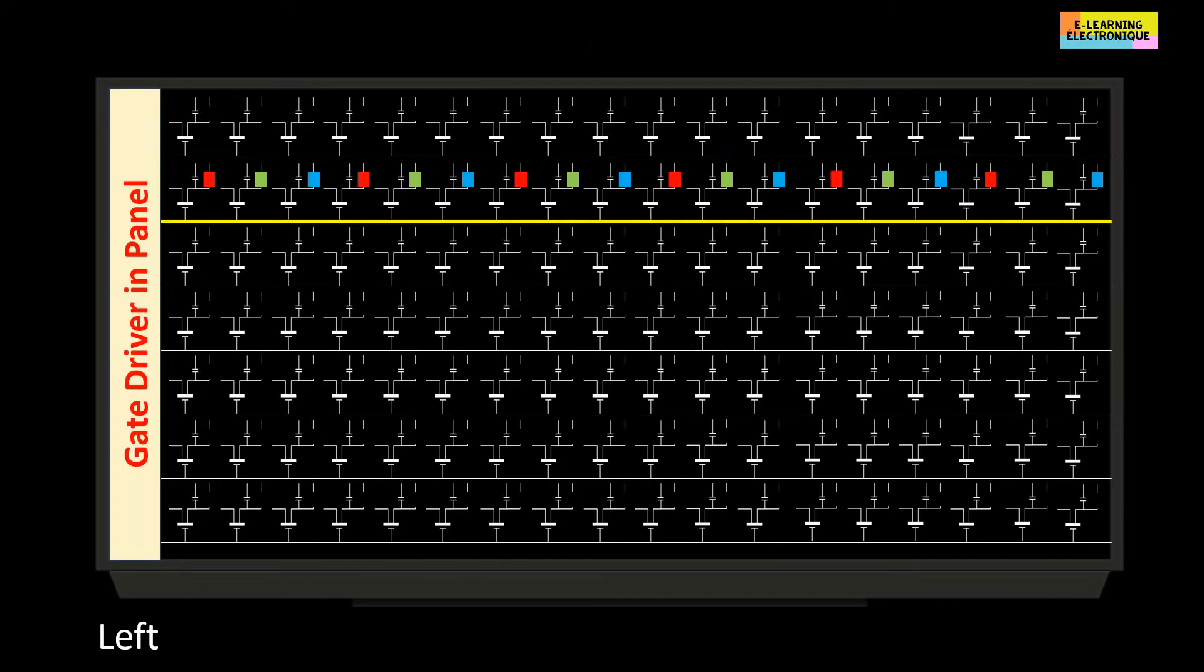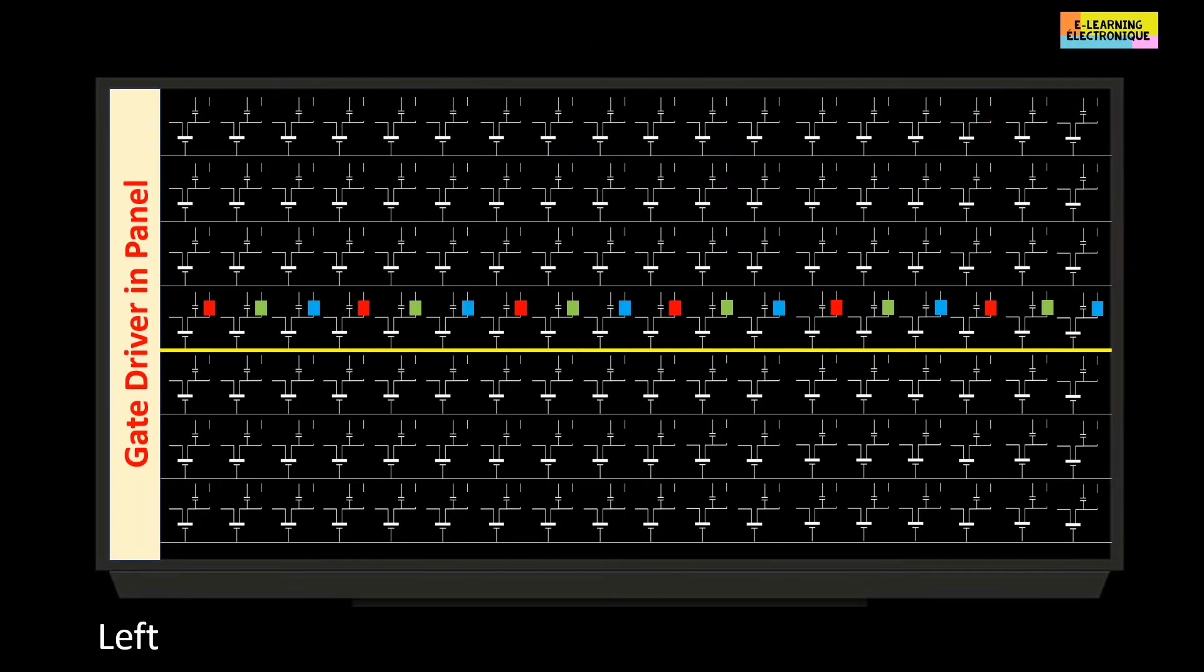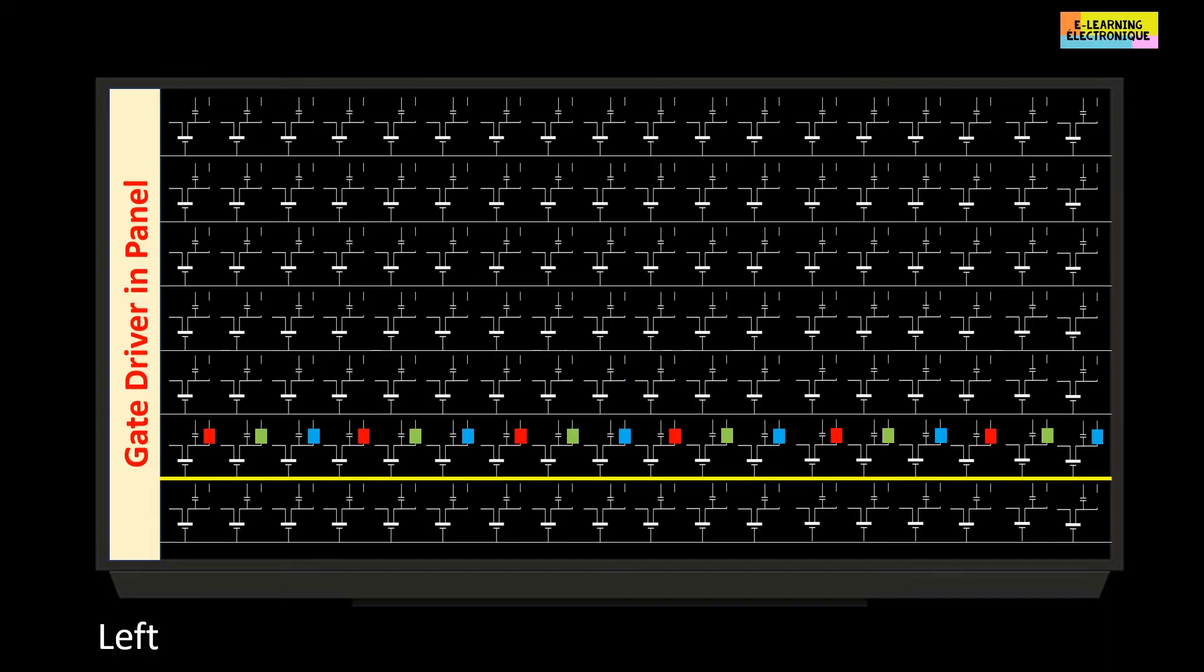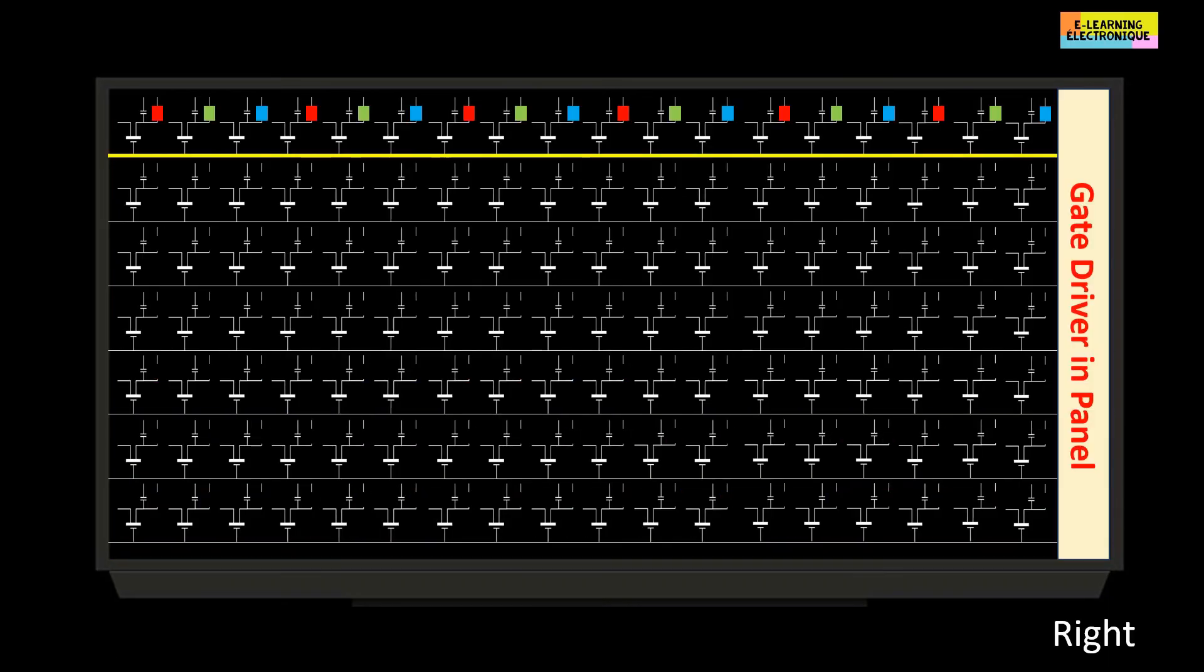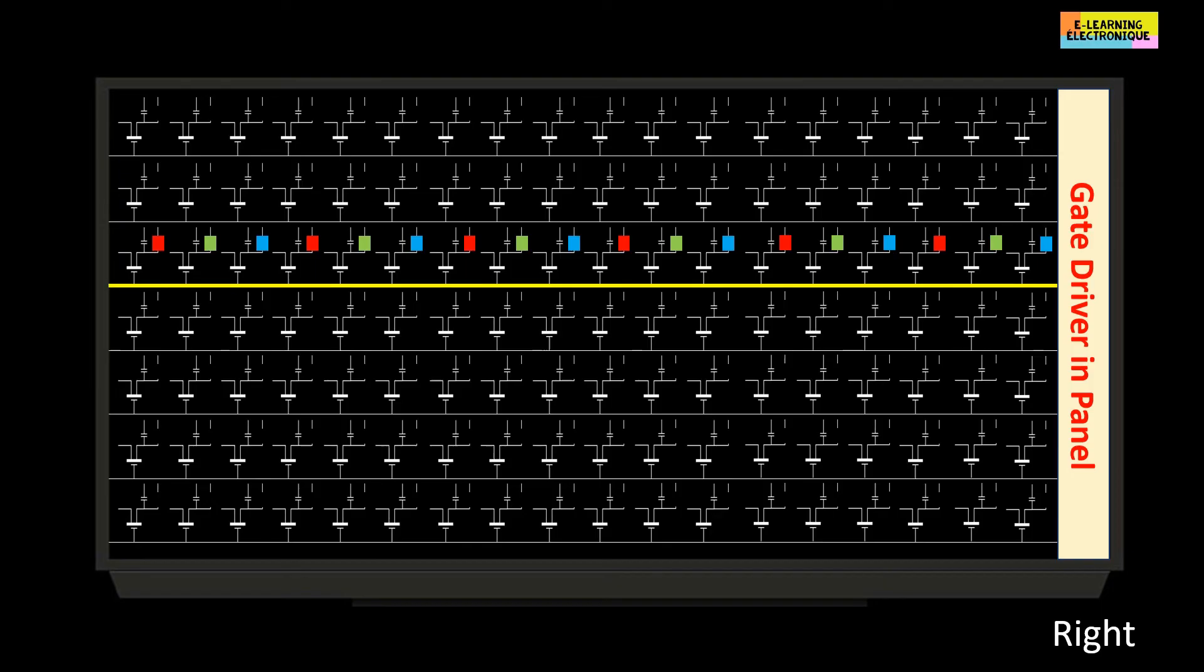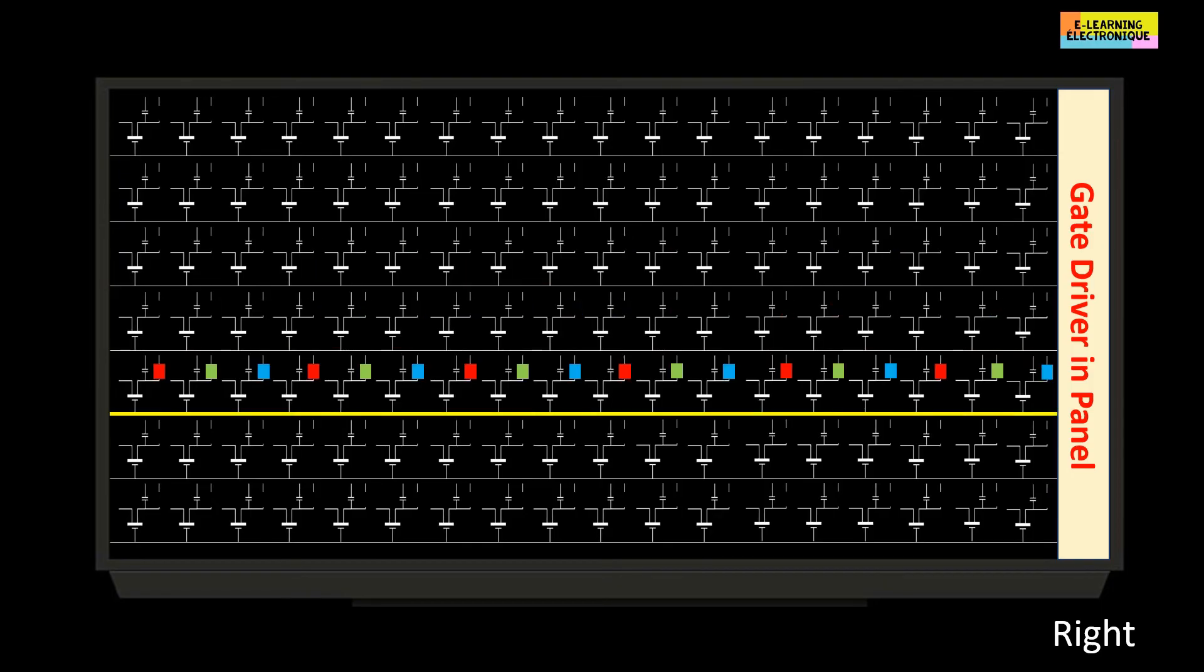The pixels can be controlled in various ways. First the scanning direction can be from left to right if the gate driver is installed on the left side of the screen. This direction will be reversed if the driver is put on the right side of the screen.